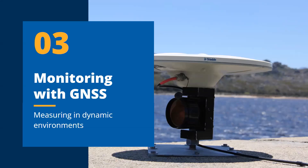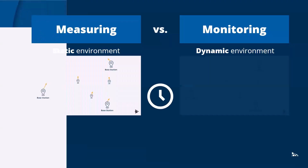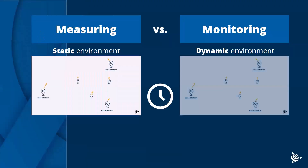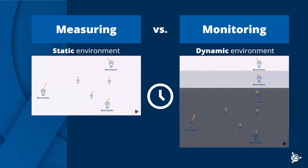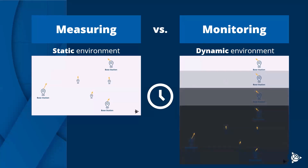The biggest difference between just measuring with GNSS and monitoring with GNSS is that when we're monitoring, we're always measuring in a dynamic environment. Up until now, we've been looking at static measuring, which means we're taking one measurement and treating it as a snapshot of what's happening. We can treat that as a more static environment — on any given day, we went out and measured all these pieces and expect them to stay still.